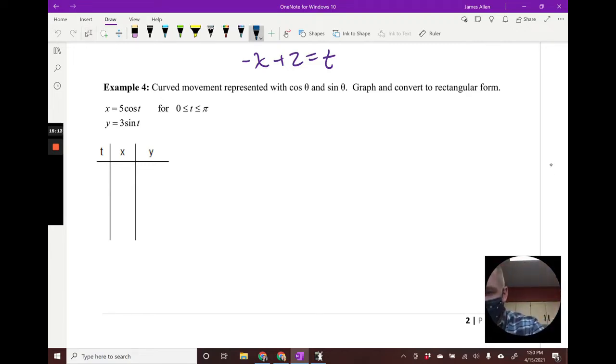Let's use some familiar trig values: zero, pi over two, and pi. Plugging in zero for cosine, cosine of zero is one times five equals five. Cosine of pi over two is zero times five equals zero. For pi, that's negative one times five equals negative five.